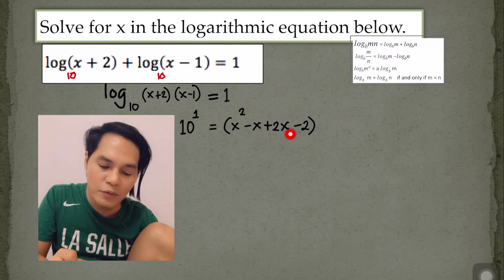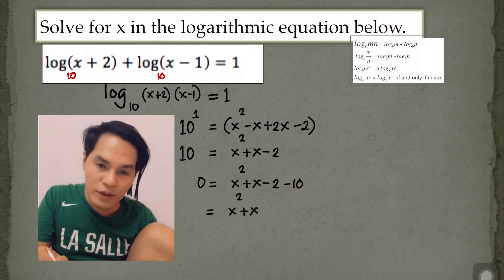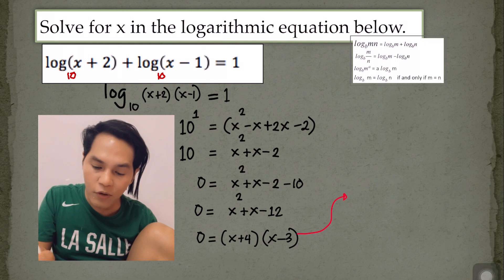x squared minus x plus 2x minus 2. We simplify this. You now have here 10 is equal to x squared plus x minus 2. And then, here we go. This is now in a quadratic equation. Then solve by factoring. There you go. The values of x we have here negative 4 and 3.